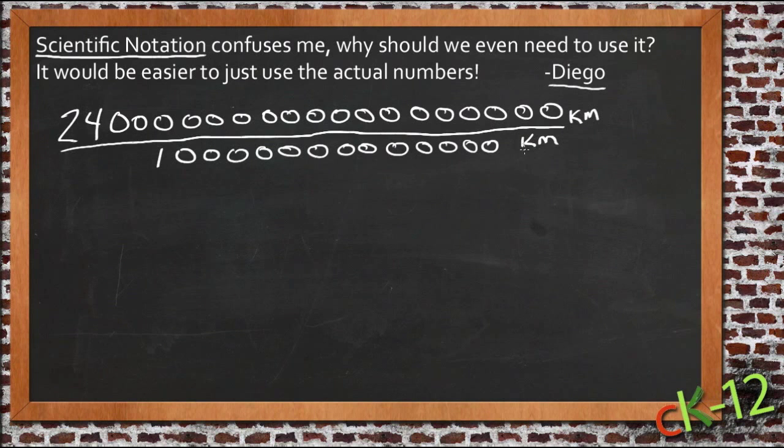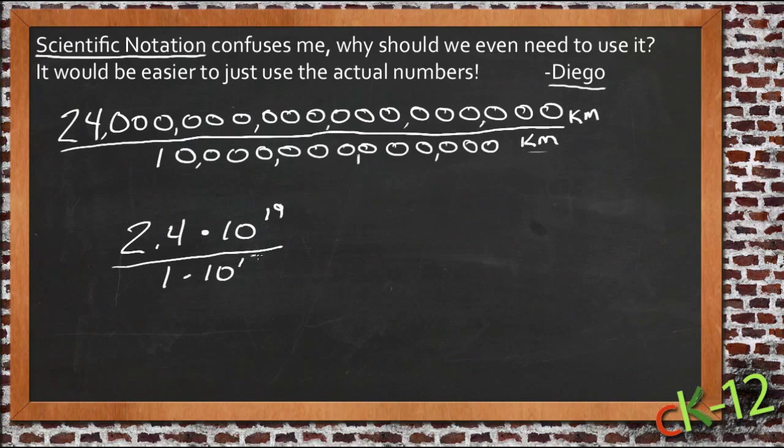So 1 light year is about this many kilometers - hundreds, thousands, millions, billions, 10 billion kilometers, and the closest galaxy is hundreds, thousands, millions, billions, trillions, 24 quadrillion, 24 quadrillion kilometers away. So this is a relatively easy calculation from a scientific standpoint. But writing out all these zeros takes forever, and you can see why something like this would be a little bit unwieldy to write in the middle of a textbook over and over again. This is where scientific notation really comes in. I can write this same information as 2.4 times 10 to the 19th over 1 times 10 to the 13th.